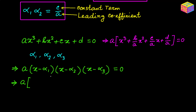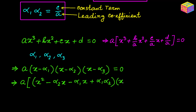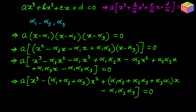First we are going to multiply the first two factors, giving us a quadratic expression, and then we have one other factor which is x minus alpha sub 3. Multiplying those two together, we finally get: a times [x cubed minus (alpha sub 1 plus alpha sub 2 plus alpha sub 3) times x squared plus (alpha sub 1 times alpha sub 2 plus alpha sub 2 times alpha sub 3 plus alpha sub 3 times alpha sub 1) times x minus alpha sub 1 times alpha sub 2 times alpha sub 3] equals zero.